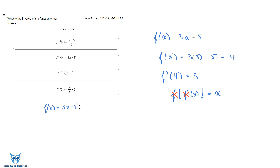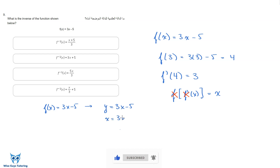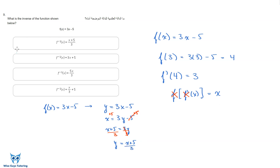To find the inverse of f of x equals 3x minus 5: first replace f of x with y. Then swap x and y, giving x equals 3y minus 5. Now solve for y algebraically — add 5 to both sides: x plus 5 equals 3y. Divide both sides by 3: y equals (x plus 5) over 3. So f inverse of x equals (x plus 5) over 3. The notation f to the negative one of x means the same thing.